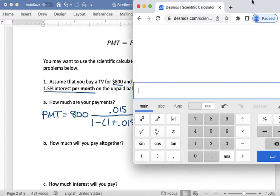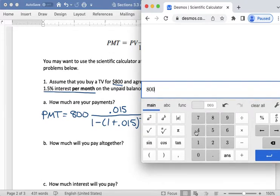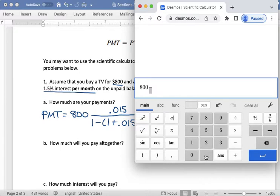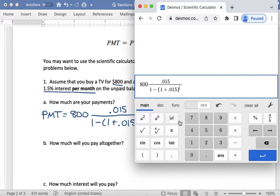So plug this into my calculator here. We have 800. I'm going to use my A over B button and then my power here is negative 18. So $51.04 is going to be my monthly payment.